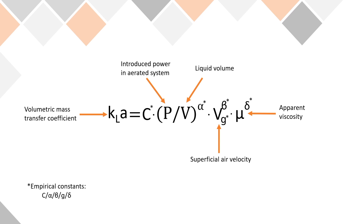We should be careful when using dimensional estimates to predict conditions in real cultivation or fermentation processes. Any difference in medium chemical composition or bioreactor geometry can significantly increase deviations between predicted and real KLA coefficient values.